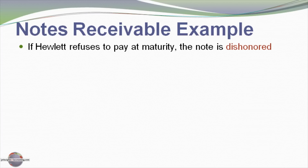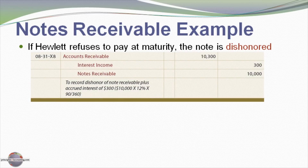If Hewlett refused to pay at maturity, the note is said to be dishonored. We're going to go after Hewlett and try to collect. We come back in and debit accounts receivable $10,300, remove the dishonored note receivable from the books, and record the interest income — since we're still expecting to collect that. If in doubt, we might follow an alternative accounting path, but we're assuming we'll still be able to collect the money due to us.